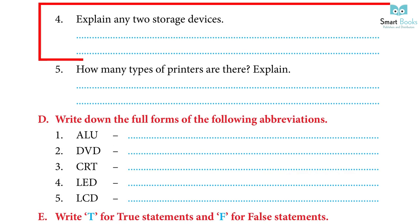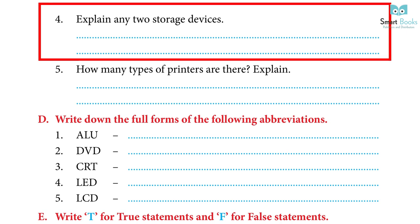4. Explain any two storage devices. Answer: Memory card — It is a small chip-like device that stores electronic data. It can also be inserted into a smartphone. DVD — It stands for Digital Versatile Disk. It is used for data storage, recording, and playing audios and videos.